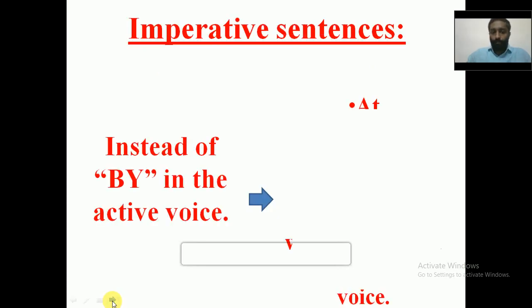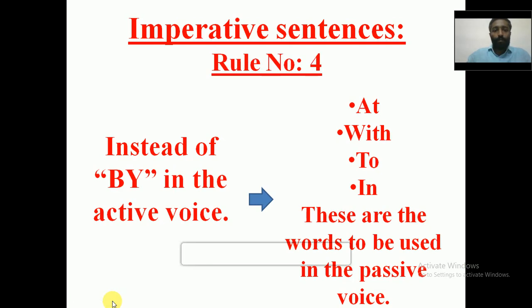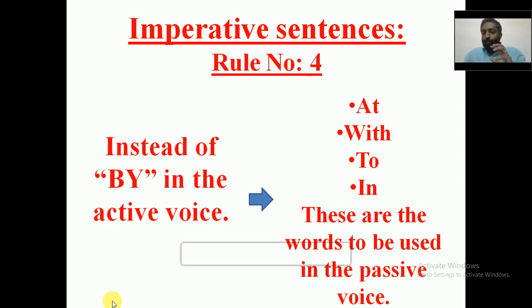So what is the next rule? Rule number 4. Instead of 'by' in the active voice — you remember that is one of the basic changes of active and passive voice — when you are converting an active into passive voice, we have to use the word 'by' to denote the agent. Instead of 'by', there are four words that can be used in the passive voice: at, with, to, in. You must know the circumstances or situations when to use all these four words.